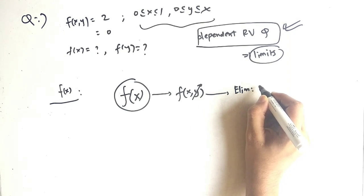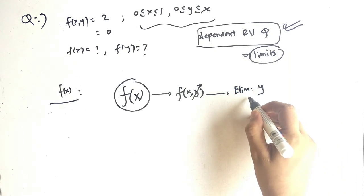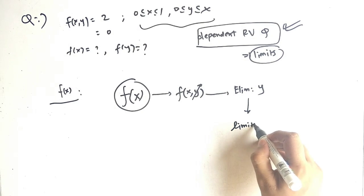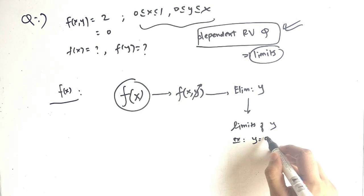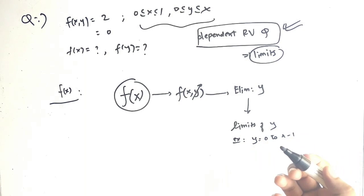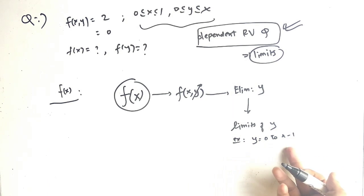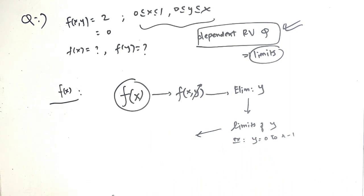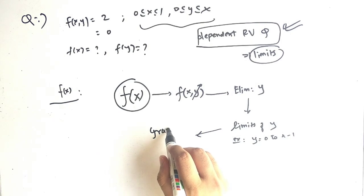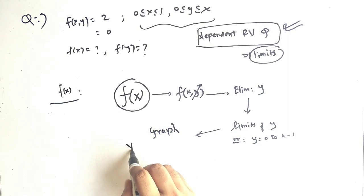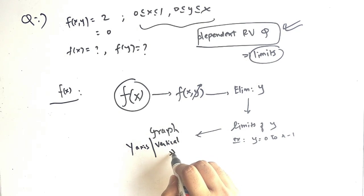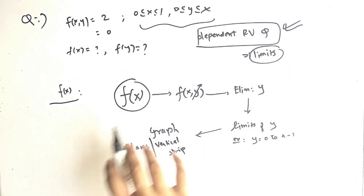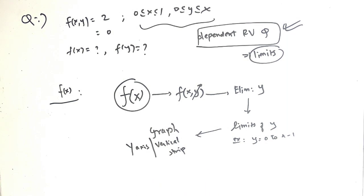To eliminate y, we need to know the limits of y. For example, y limits could be from 0 to x minus 1, or something like that. To find the limits of y, we plot a graph and from the graph we choose the vertical strip — the y-axis strip. If you follow this flow, you can get the answer in minutes.